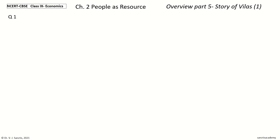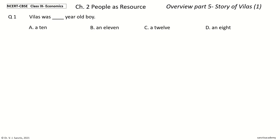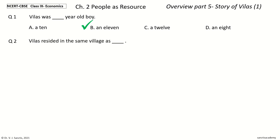Question 1: Vilas was dash year old boy. The options are: a) 10, b) 11, c) 12, d) 8. And the answer is 11. So Vilas was an 11 year old boy.